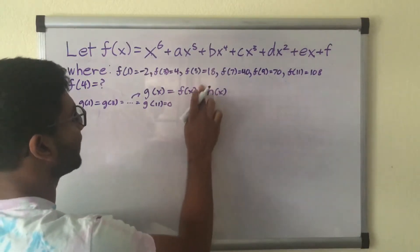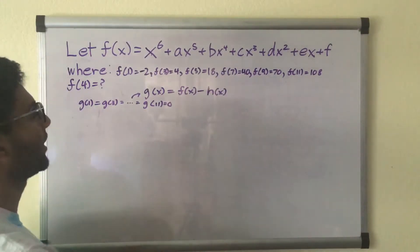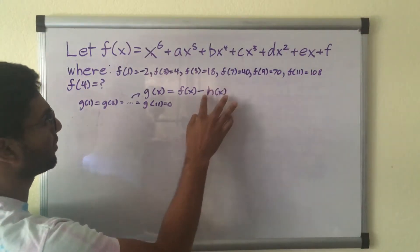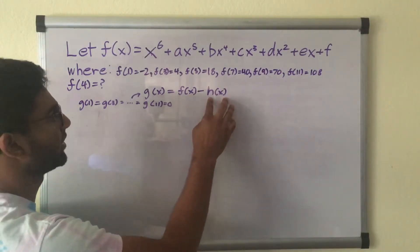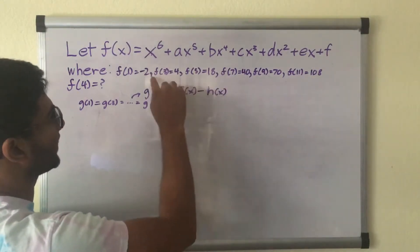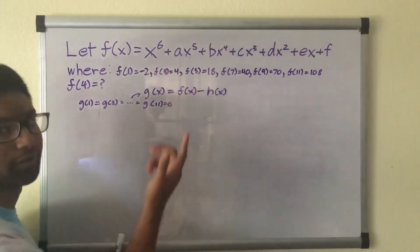So actually I'll write f of x minus h of x. So that when we replace this h of x with a function we find, we will subtract the exact outputs that we get and we'll get 0 for those initial values.